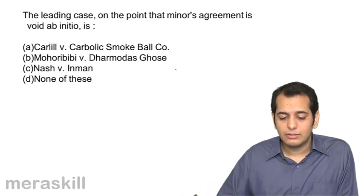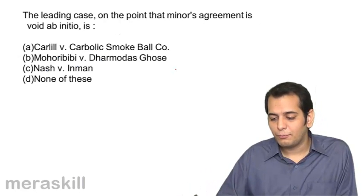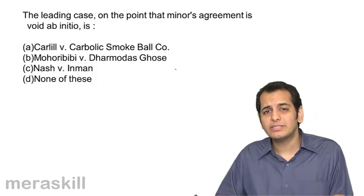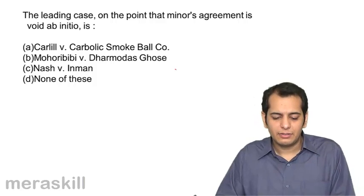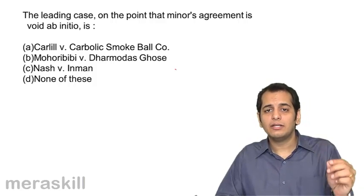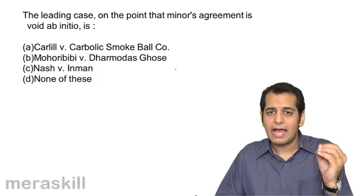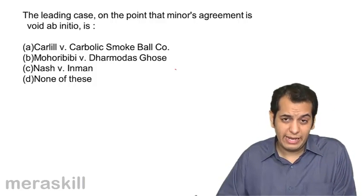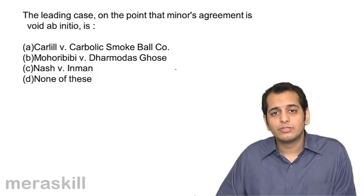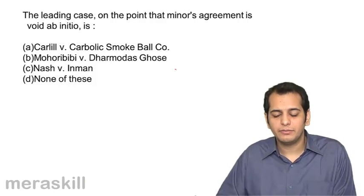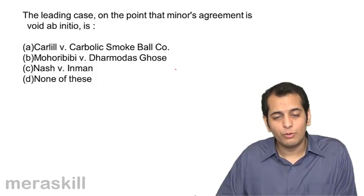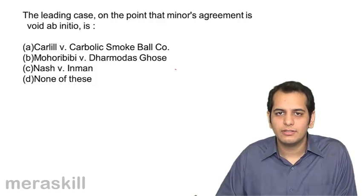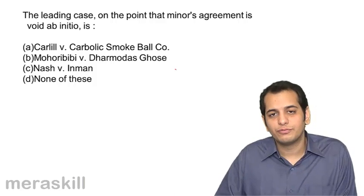The next question: the leading case on the point that a minor's agreement is void ab initio — in which case was it decided that a minor's agreement would be void ab initio? Was it A. Carlyle vs. Carbolic Smoke Ball Company, B. Mohri Bibi vs. Dharmadas Ghosh, C. Nash vs. Inman, or D. None of these?